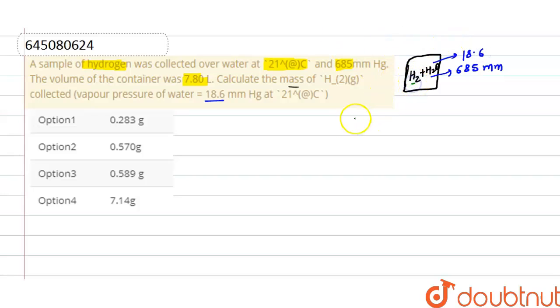So vapor pressure of hydrogen here, or pressure of hydrogen, will be 685 minus 18.6, that is 666.4 mm of Hg. And to convert it into atmospheric, it will be 666.4 divided by 760, and it will be 0.8768 atmospheric.